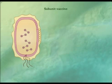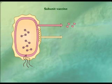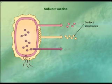A more modern approach is to create subunit vaccines. These vaccines consist of purified parts from the pathogen that can serve as an antigen, such as a surface structure or, in some cases, an internal component.